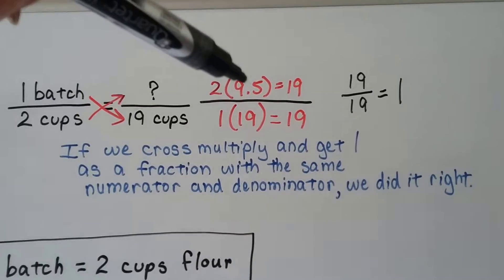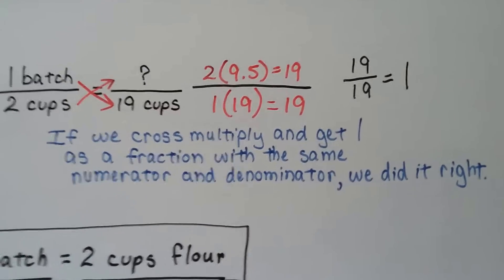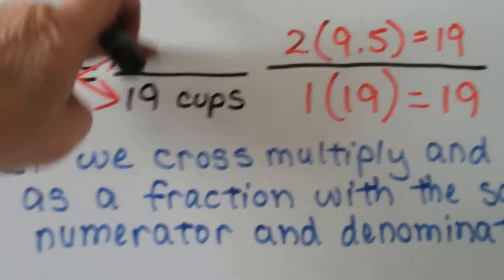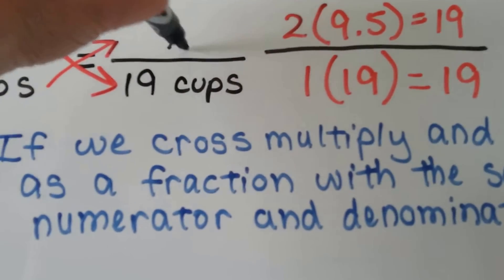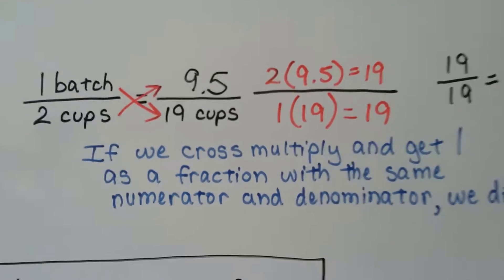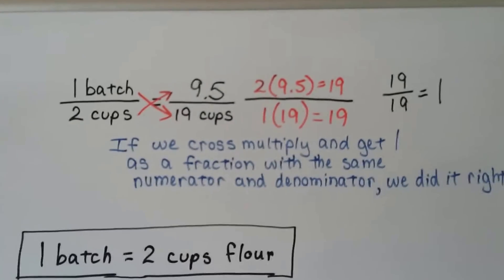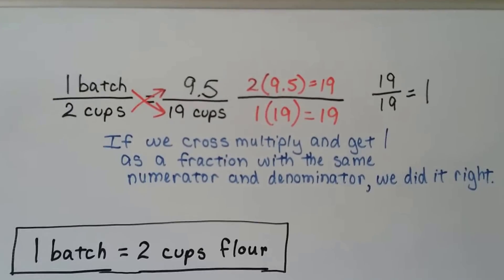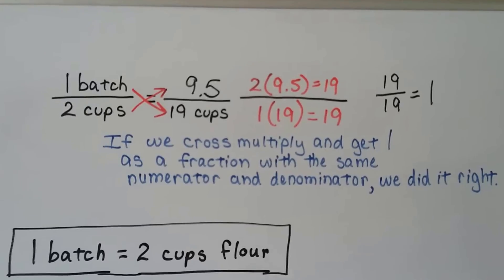So we come up with 9.5 that would go here. That's nine and a half batches. But it wants whole batches. So the answer is nine. We don't count the half.